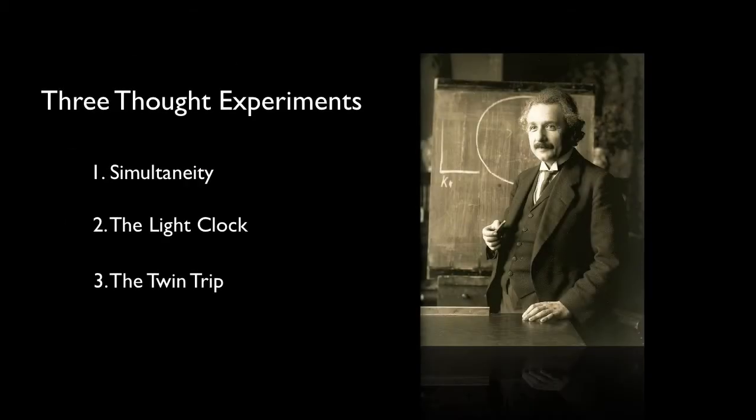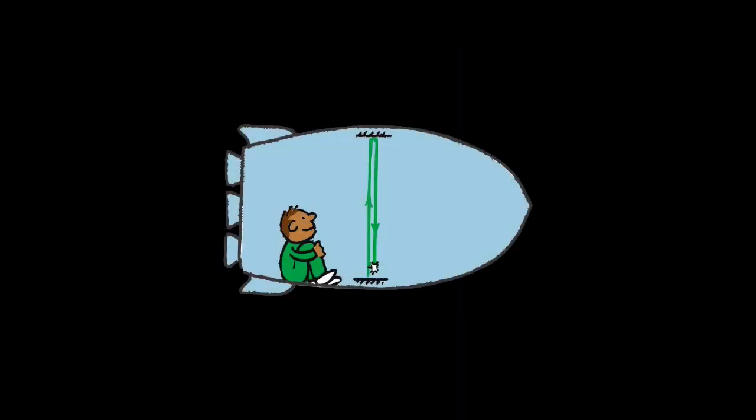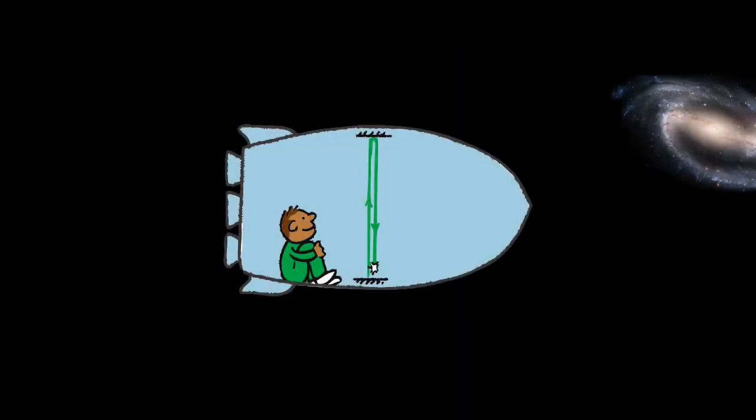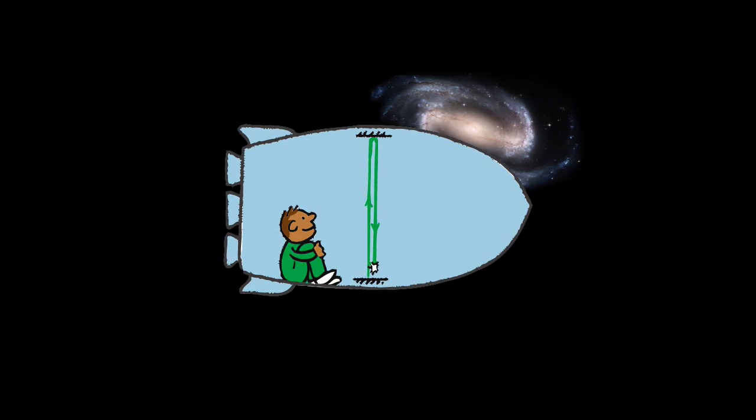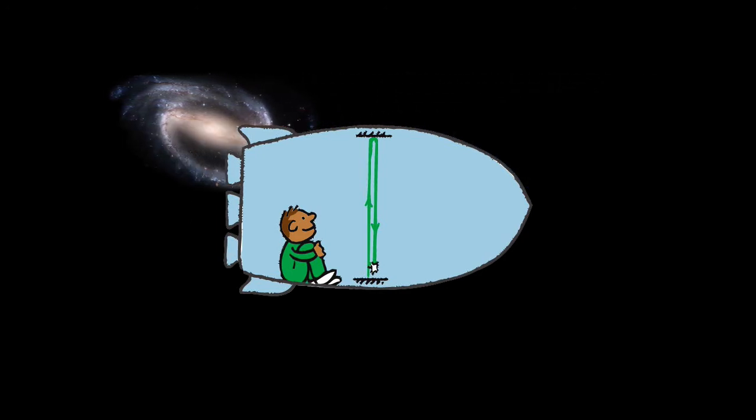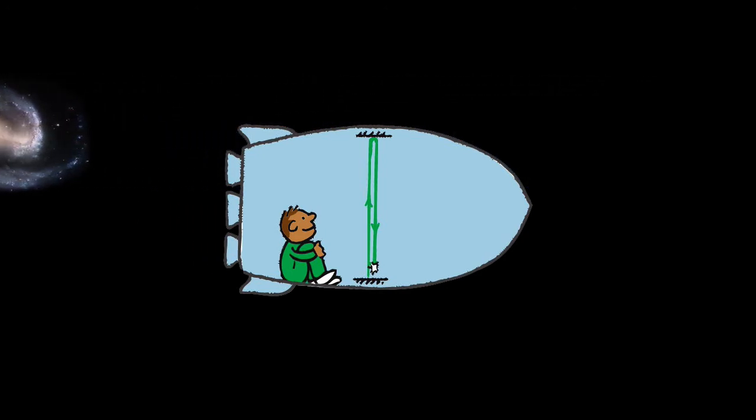All right, here's the next scenario. You're in a ship traveling at super high speed, say half the speed of light. On board, you have two perfectly parallel mirrors. A beam of light bounces back and forth. Each bounce you identify as one tick on a clock. So what you have here is a light clock.